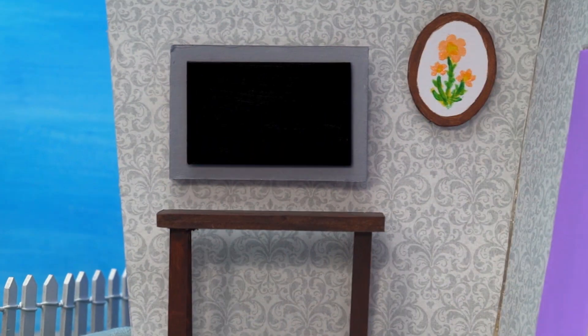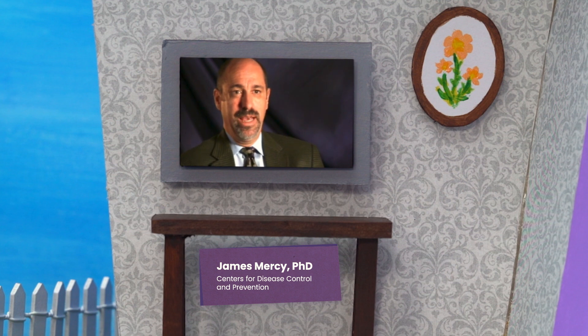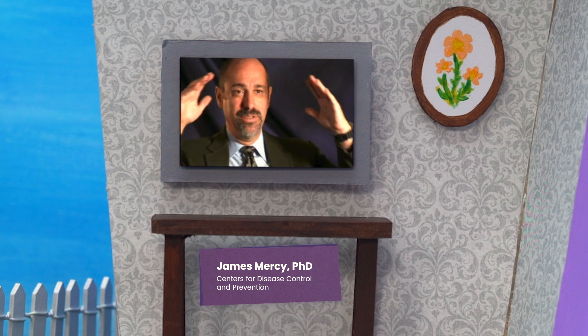The purple house behind the narrator spins on its base, revealing a cutaway of a living room with patterned wallpaper and a flat screen TV. The screen clicks on, and James Mercy, PhD, Centers for Disease Control and Prevention, appears. He explains: 'All of us live in what people call an ecology. There's us as individuals, and surrounding us is our family and friends at one level. We live in communities, and that surrounds us at another level. And then at another level, the whole society surrounds us.'